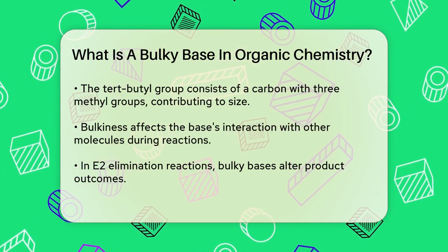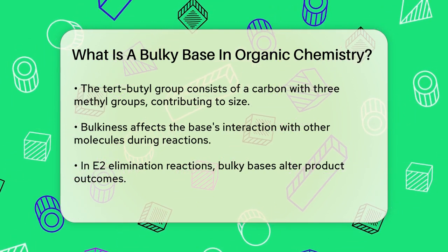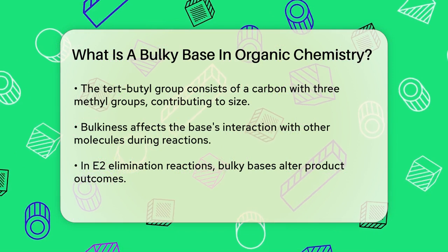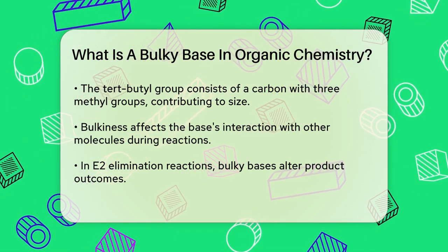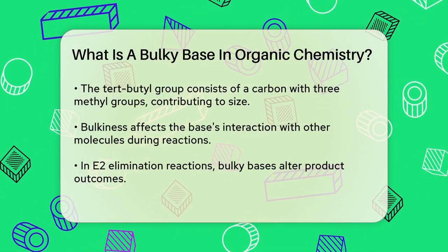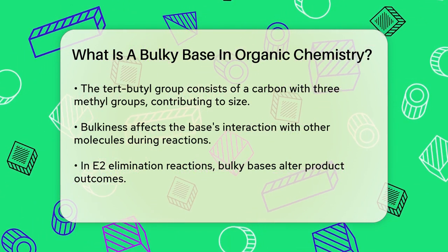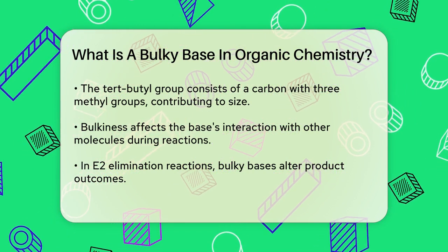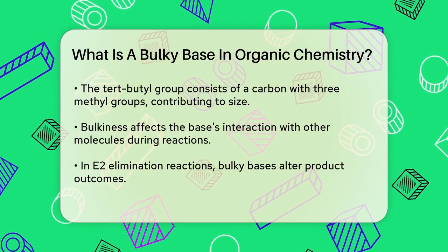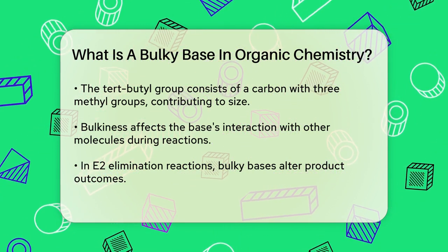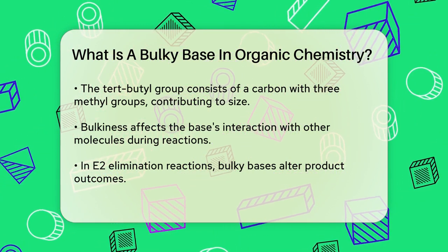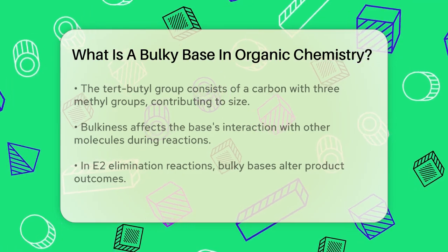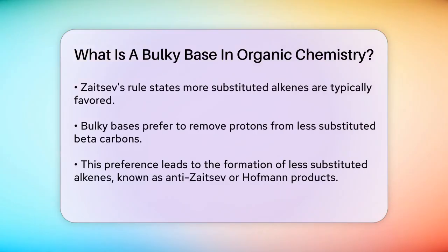The bulky base prefers to remove a proton from the less substituted beta carbon due to steric hindrance. This means that instead of forming the more stable, more substituted alkene, the reaction favors the formation of the less substituted alkene. This is known as the anti-Zaitsev or Hoffman product.